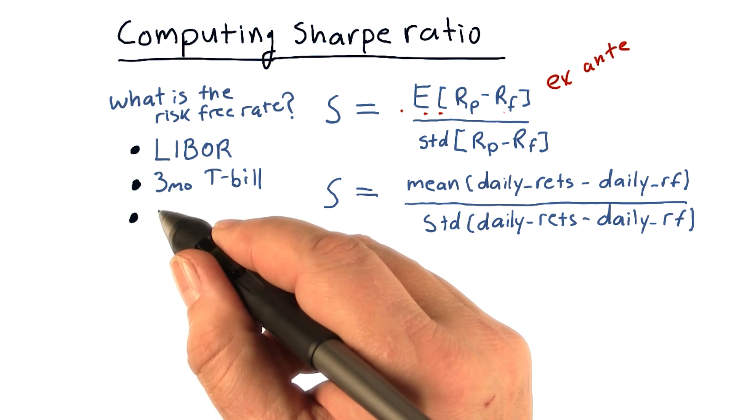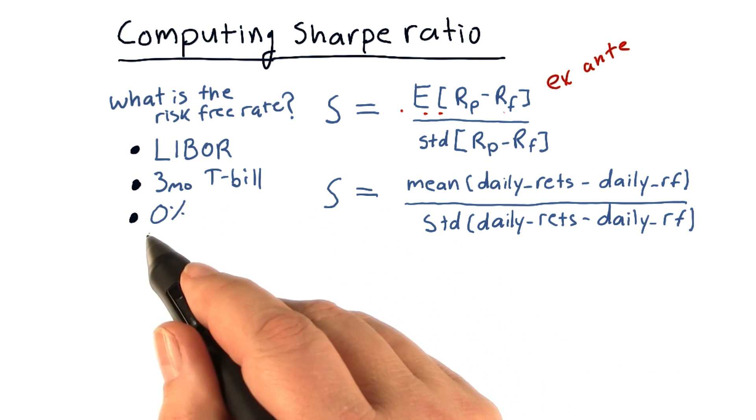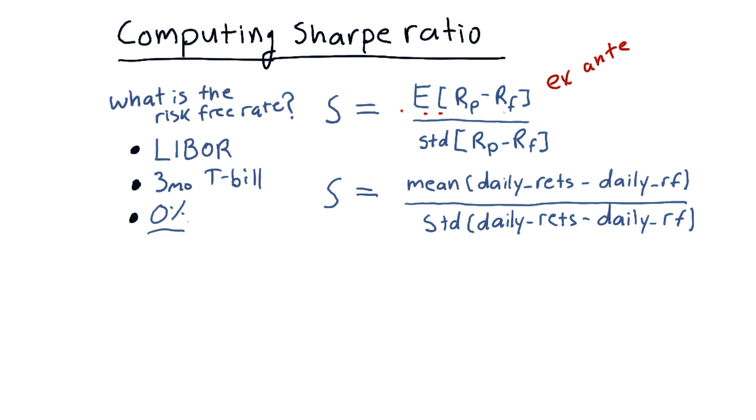And finally, a value that people have been using a lot over the last few years is zero. Zero is a good approximation to the risk-free rate.